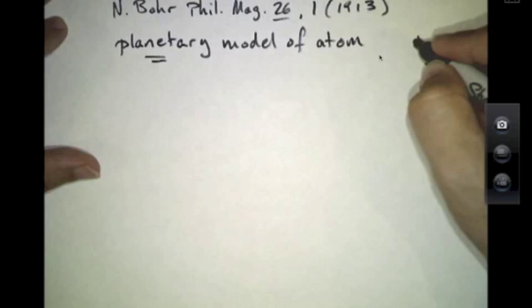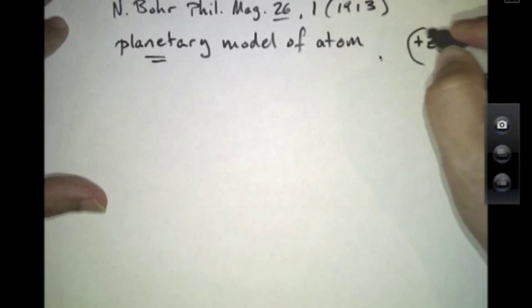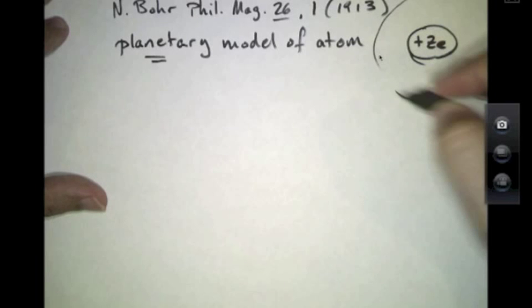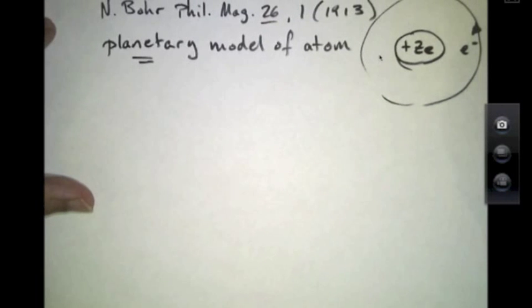In this model, Bohr used the recent discovery of Rutherford that there was a dense core of a nucleus at the center of an atom to develop a picture whereby electrons are orbiting around the positive core held in place by the Coulomb field.